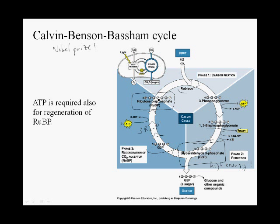You don't really have to remember all of this. The key point is that if you have enough carbon dioxide being fixed, then some of the intermediates in the Calvin-Benson cycle can leave the cycle and still leave enough intermediates that can rearrange themselves and complete the cycle.